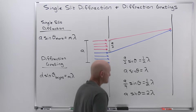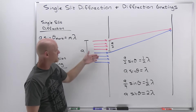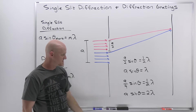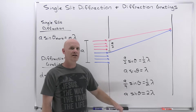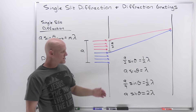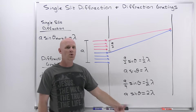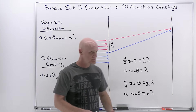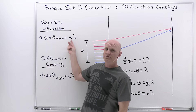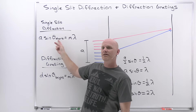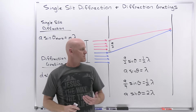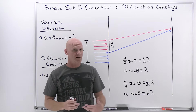We could keep doing this. Breaking the slit into six regions gives A sine theta equals 3 lambda; eight regions gives A sine theta equals 4 lambda. Ultimately, what we've derived is that A sine theta equals m lambda for any integer m — and this is for the dark fringes, because we've met the condition of destructive interference.